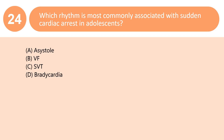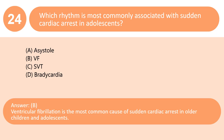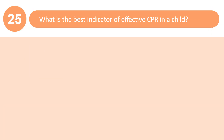Which rhythm is most commonly associated with sudden cardiac arrest in adolescents? A. Asystole. B. VF. C. SVT. D. Bradycardia. Answer: B. Ventricular fibrillation is the most common cause of sudden cardiac arrest in older children and adolescents.